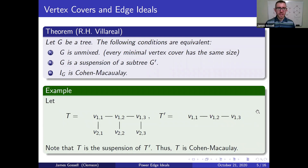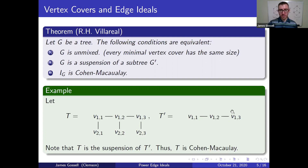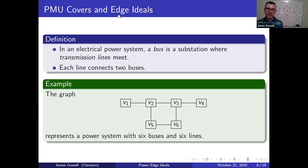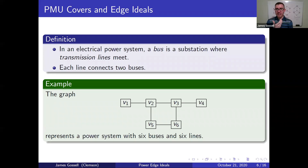That takes care of the introduction on vertex covers and edge ideals. Now we're going to shift gears and move into the world of PMU covers and power edge ideals. From now on, every graph we look at can be thought of as a power grid. The vertices are going to be buses — substations where transmission lines meet — and the edges are going to be the transmission lines.